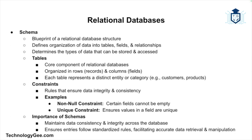A schema defines the structure of a relational database, specifying how data is organized into tables, fields, and relationships. It acts as a blueprint for the database, determining what data can be stored and how it can be accessed. Constraints are rules that ensure the integrity of the data — for example, a constraint may enforce that a particular field cannot be left blank or must contain unique values. Schemas are important for maintaining data consistency and ensuring all entries conform to the same rules.